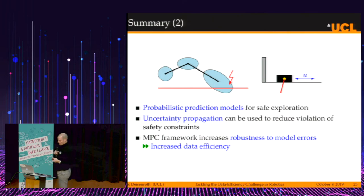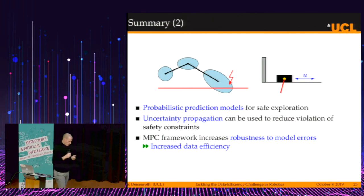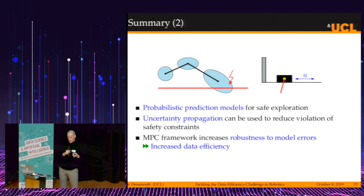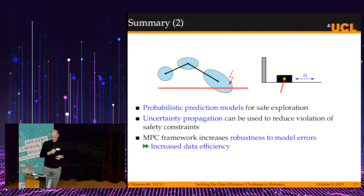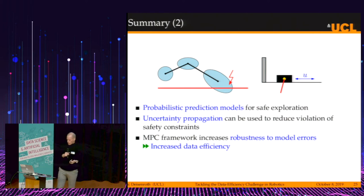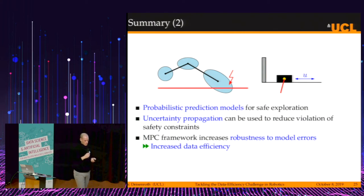To summarize this part: probabilistic prediction models can be used for safe exploration, and uncertainty propagation can be used to reduce violations of safety constraints. Additionally, the model predictive control framework increases robustness to model errors and leads to faster learning — increased data efficiency in reinforcement learning.